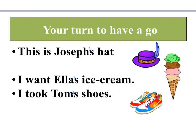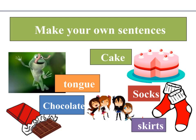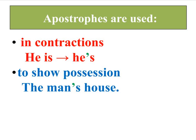Now I'd like you to try and make your own sentences. Choose one or two of these pictures to write sentences about, thinking carefully about who owns the cake, the socks, the skirts, the chocolate, or the tongue. Quick reminder: we use apostrophes in contractions, like 'he is' becomes 'he's,' or to show possession, like 'the man's house' — who owns the house? The man.